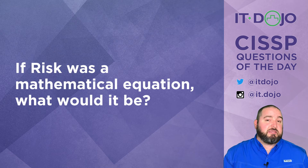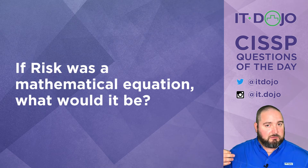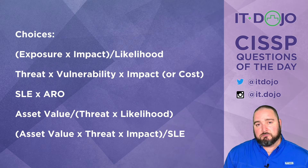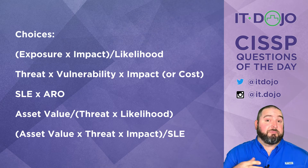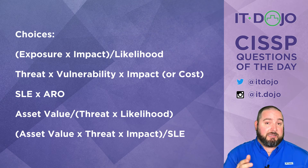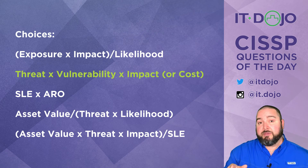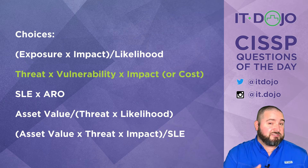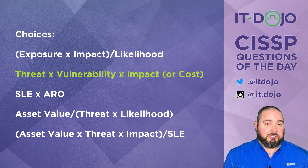Alright, here comes question number two today. My question to you is: if risk was a mathematical equation, which of these would it be? Go ahead and look at that, ponder it, click pause if you need to, and when you're ready click play. Threats times vulnerabilities times impact is widely regarded as the equation for risk. Sometimes people substitute impact for cost, or sometimes you might just see the equation as threats times vulnerabilities, but more commonly these days we see it as threats times vulnerabilities times cost equals risk. All the other stuff was just things I made up to try and confuse you.